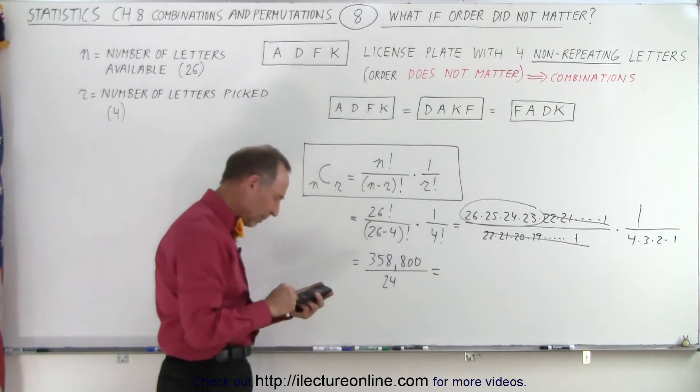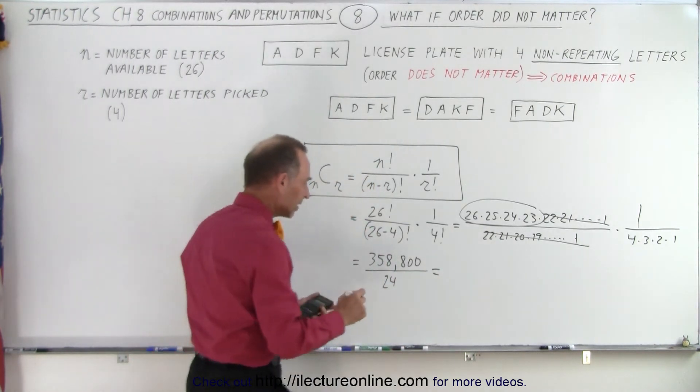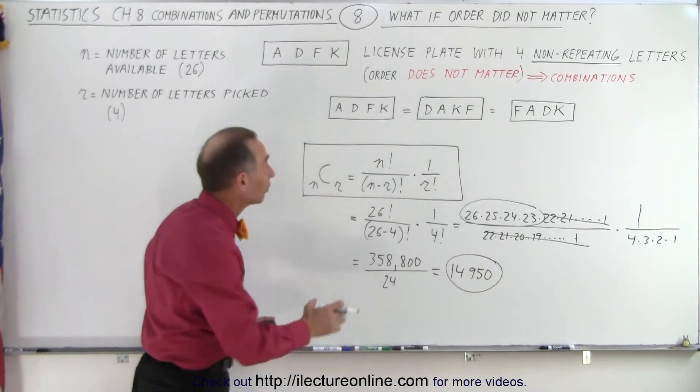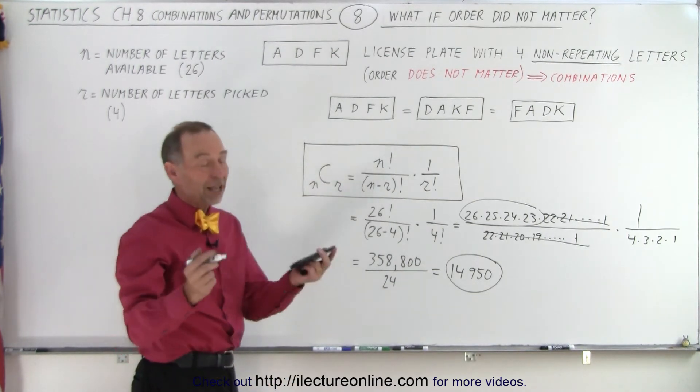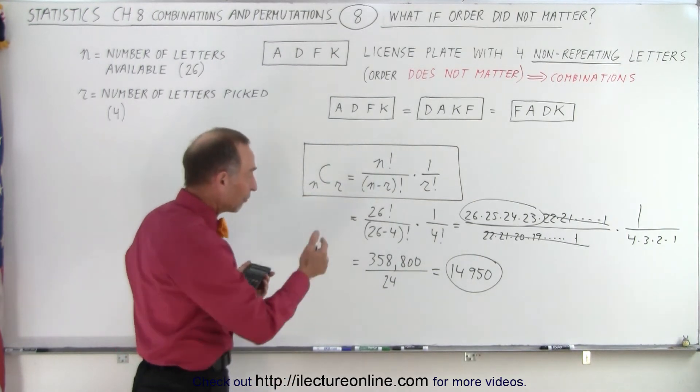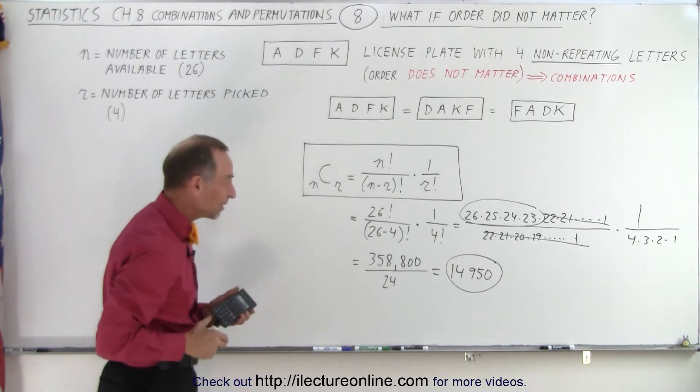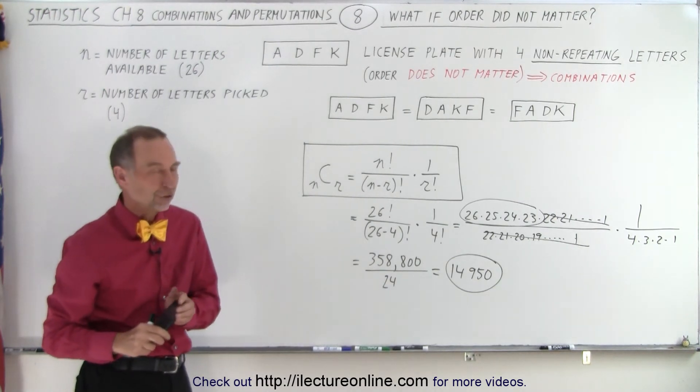So divide that by 24, and we get 14,950. So if order doesn't matter and those three license plates were the same, then of course you'd only have 14,950 combinations instead of 358,800 permutations.